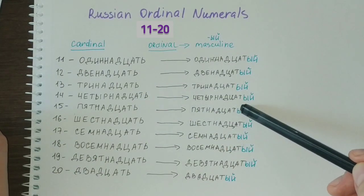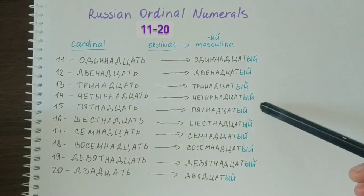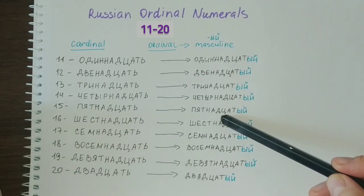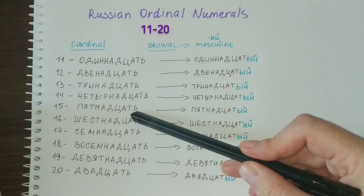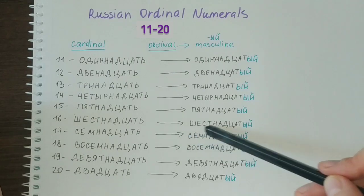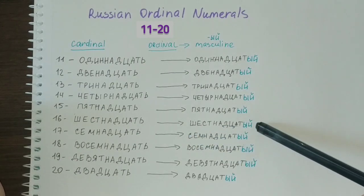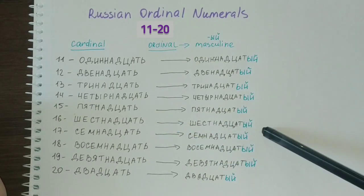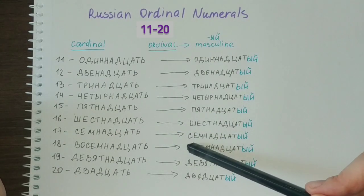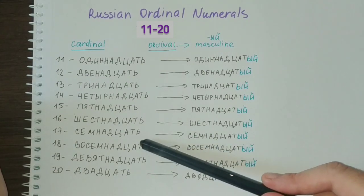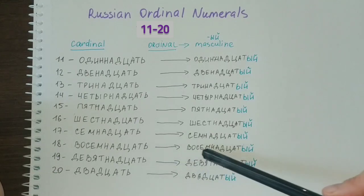14th is четырнадцатый, from четырнадцать (14). 15th is пятнадцатый, from пятнадцать (15). 16th is шестнадцатый, from шестнадцать (16). 17th is семнадцатый, from семнадцать (17).